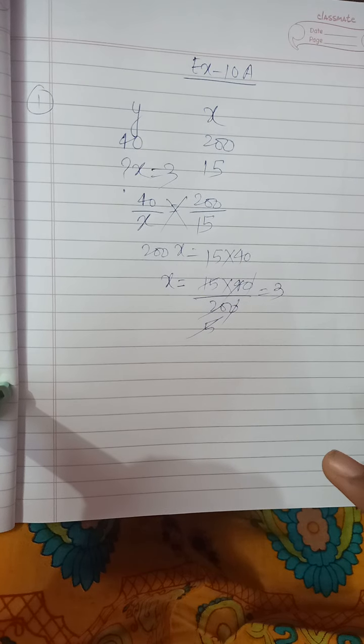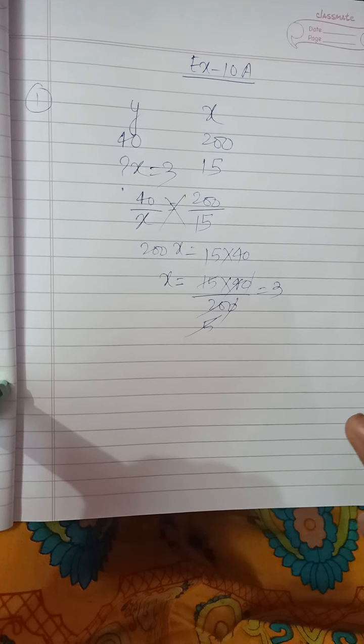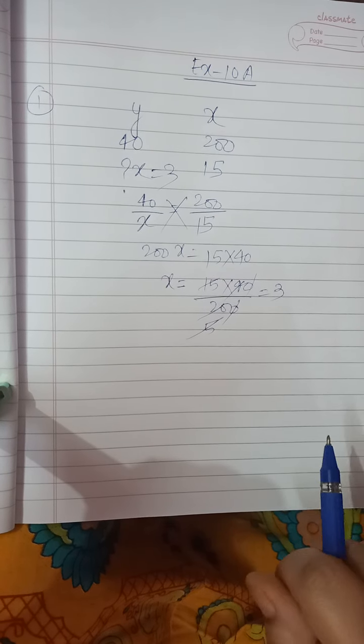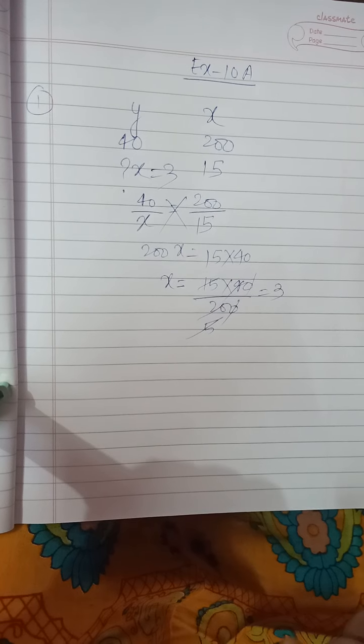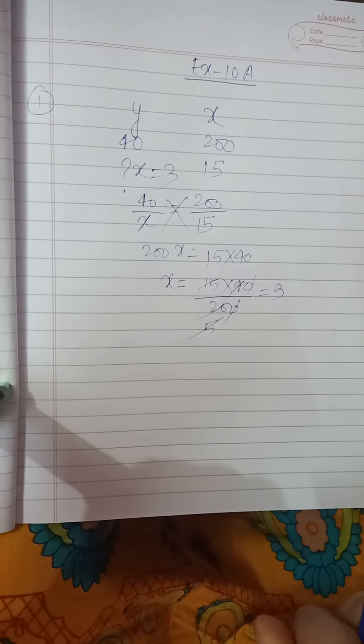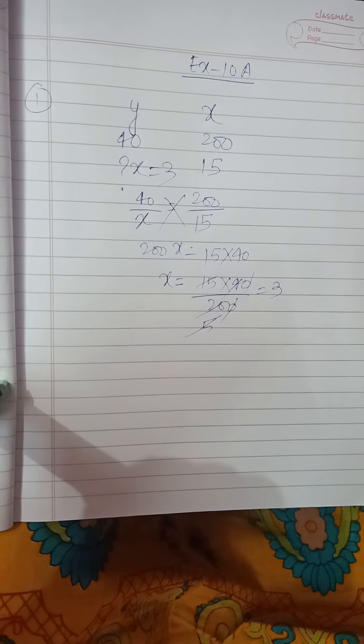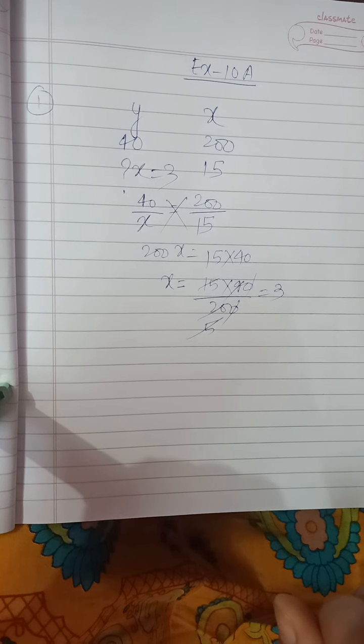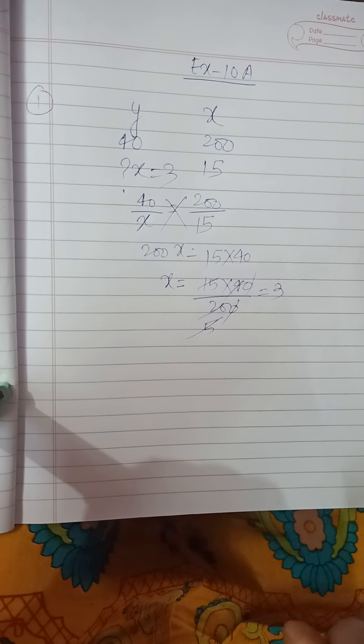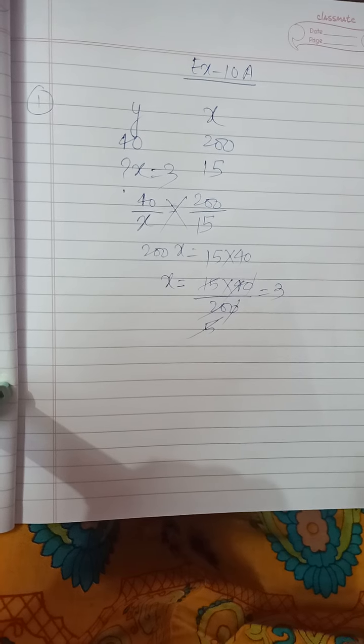In the second question, the force is not given, so consider it as x. x upon 18 equals 20 by 15. You can get the value of x. 20 by 15 equals 25 by y. Get y. 25 by value of y equals z upon 20. Get the value of z.